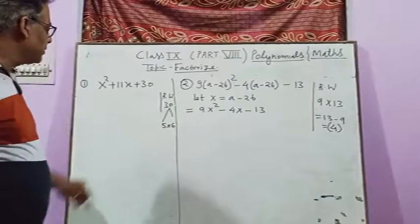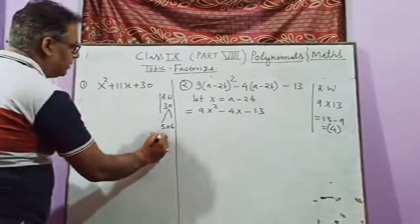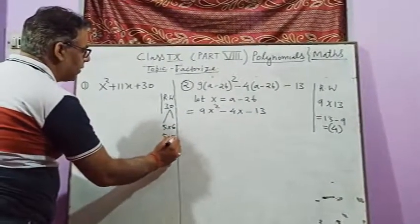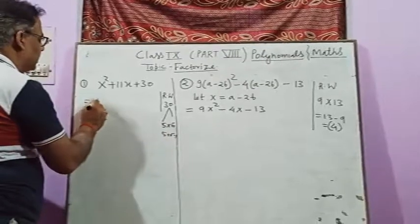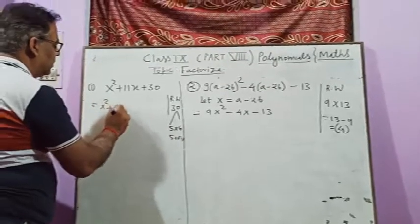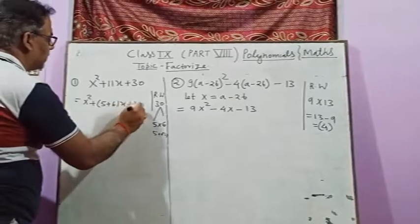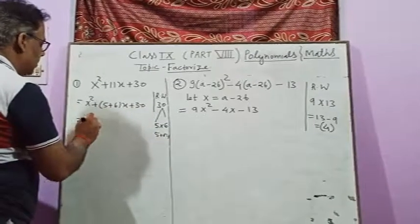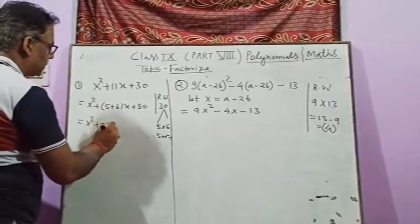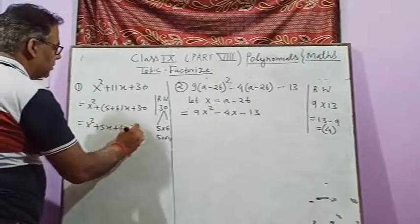We have to break it as 5 into 6. So here we have to break the middle term as 5 plus 6. And this is x square plus 5x plus 6x plus 30.